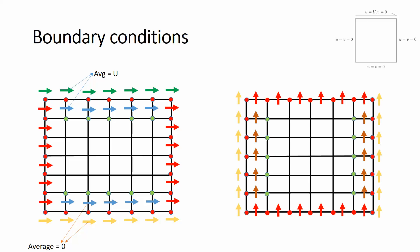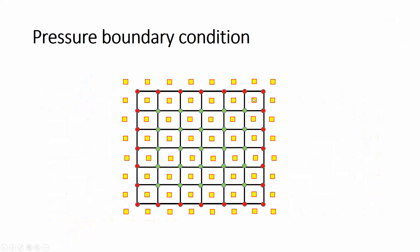The same approach applies for V velocity boundary conditions. At the top and bottom walls, V equals zero, so those V velocities can be directly assigned. For the left and right walls, the ghost-layer V velocities are set to be the negative of the adjacent interior values so that their average is zero, satisfying the no-penetration physical condition.